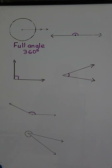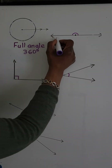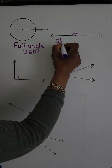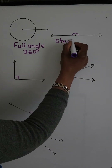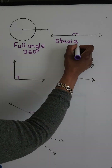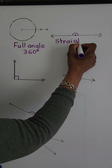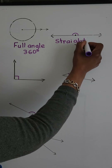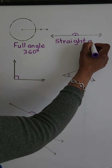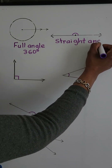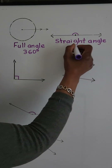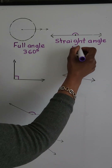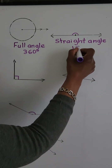Next we have a straight angle, and a straight angle measures 180 degrees.